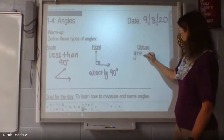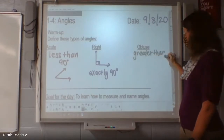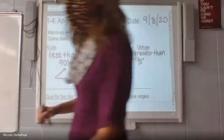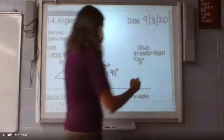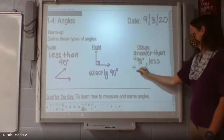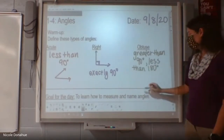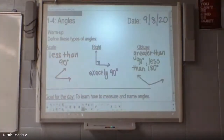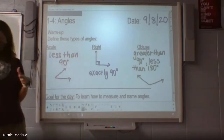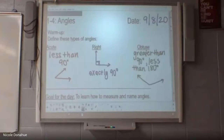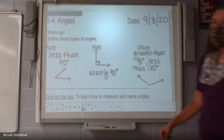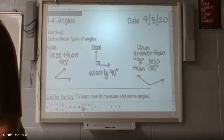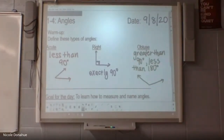So we're going to add in the obtuse piece — you could say greater than 90 degrees but less than 180. An obtuse angle is kind of like a door that's really wide open versus a door that's just slightly ajar. Greater than 90 degrees but less than 180. We're going to talk about that 180 here in a second — so these are words we're going to use a lot.